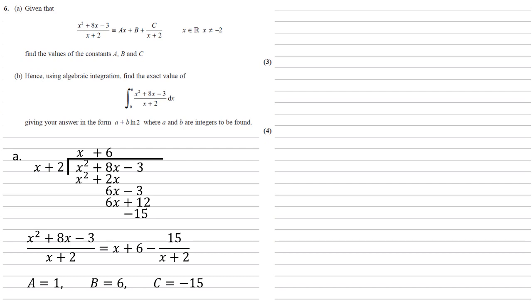For part b, hence using algebraic integration, find the exact value of the integral between 0 and 6 of x squared plus 8x minus 3 all over x plus 2 dx, and we need to give our answer in the form a plus b log natural 2, where a and b are integers to be found.